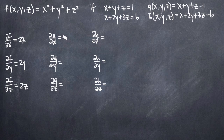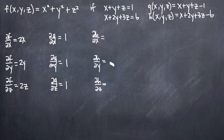For the partial derivatives of g with respect to x, y, and z: treating y and z as constants, the derivative of x is 1, so the partial of g with respect to x is 1, with respect to y is 1, and with respect to z is 1. For h, the partial with respect to x is 1, with respect to y is 2 (the coefficient on the y term), and with respect to z is 3 (the coefficient on the z term).